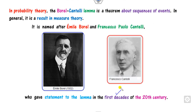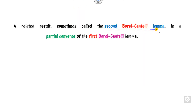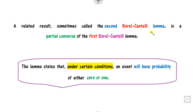We will discuss the lemma in detail. The converse of the first lemma is called the second Borel-Cantelli lemma, also called the Borel-Cantelli converse lemma. The major feature of this lemma is that under certain conditions, the probability is either 0 or 1, which is why it is called the 0-1 law.